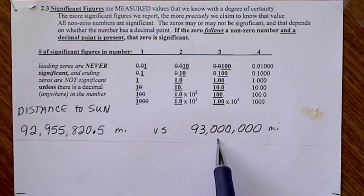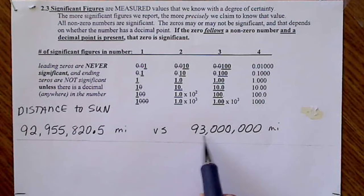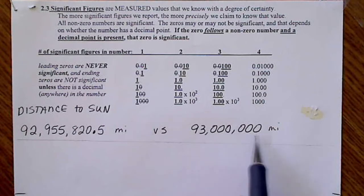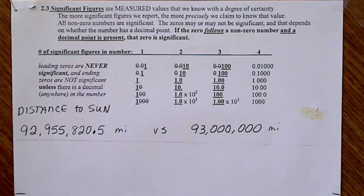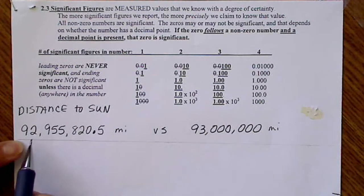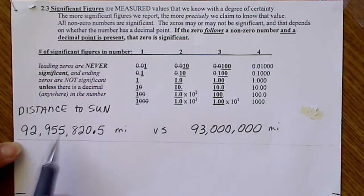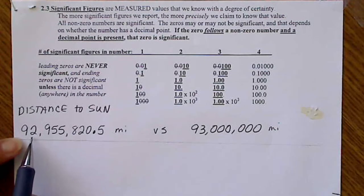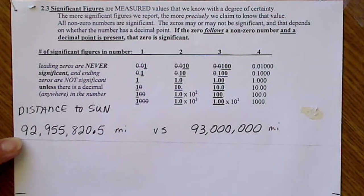If we looked at a fourth grade science book, we might see the distance to the sun written as 93 million miles. If we went to a college-level astronomy book, or actually I just googled this, we can get a much more exact value for that.